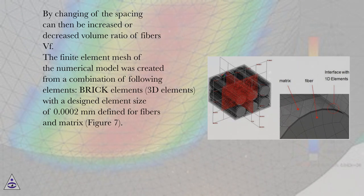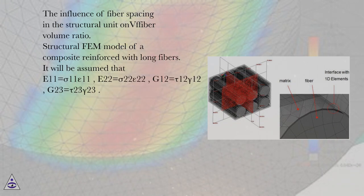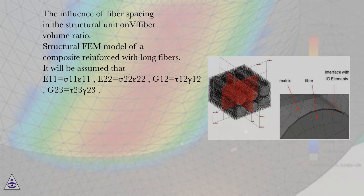The finite element mesh of the numerical model was created from a combination of brick elements (3D elements) with a designed element size of 0.0002 millimeters, defined for fibers in the matrix, as shown in figure 7. It is assumed that E11 equals sigma 11 over epsilon 11, E22 equals sigma 22 over epsilon 22, G12 equals tau 12 over gamma 12, and G23 equals tau 23 over gamma 23.